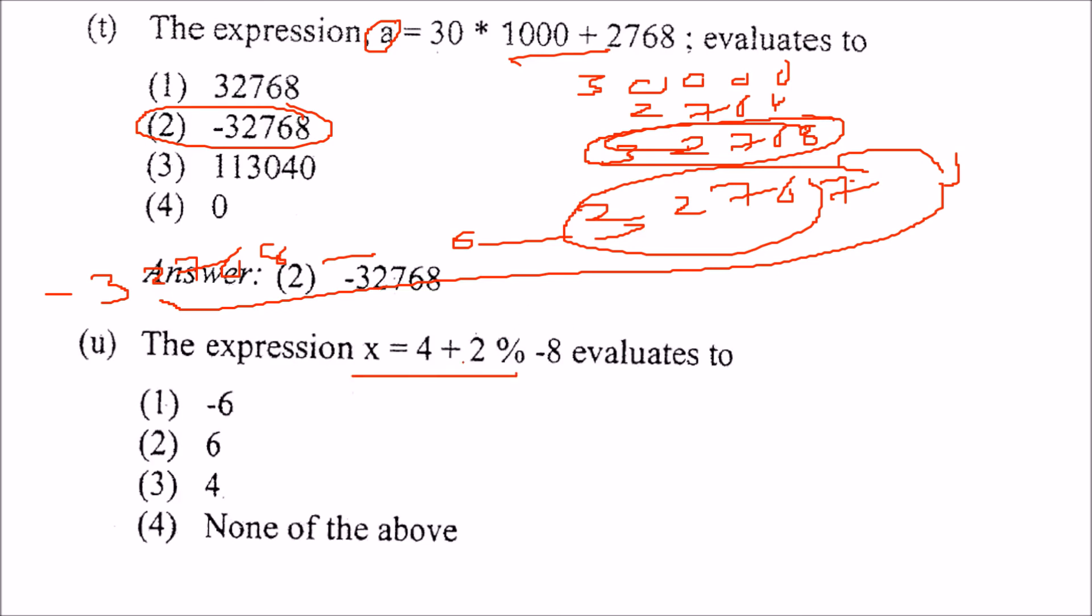The expression this evaluates to what? What will be the answer? See, the answer will be 6. Why? Since we have 4 plus 2 modulo minus 8. So, first of all this will be done. We know the precedence. So, 2 modulo minus 8. That is minus 2 by 8. Just assume this. And we know that here, we are getting the value as 2. If you have performed this, then the modulo will, if you take this only, 2 by 8. So, modulo will always give you the value. If this is higher, this is lower, you will get this value only. Always. So, this 2 will be added with 4. You get 6.